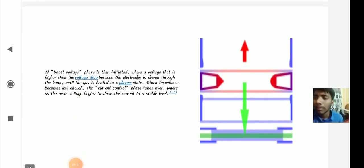A boost voltage phase is then initiated where a voltage higher than the voltage drop between the electrodes is driven through the lamp until the gas is heated to a plasma state. When the impedance becomes low enough, the current control phase takes over, where the main voltage begins to drive the current to a stable level.